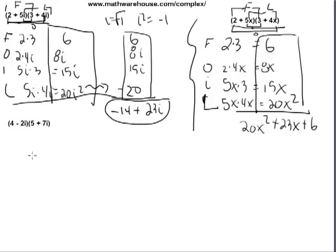Let's try another problem. Let's multiply 4 times 5. The first, 4 times 5, which is 20. The outer, which is 4 times 7i, or 28i.